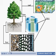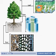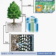Water and mineral transport begin with uptake from the soil. Water and dissolved minerals are taken up by the root hairs from the surrounding soil. Water moves through the root cortex to the vascular tissue.